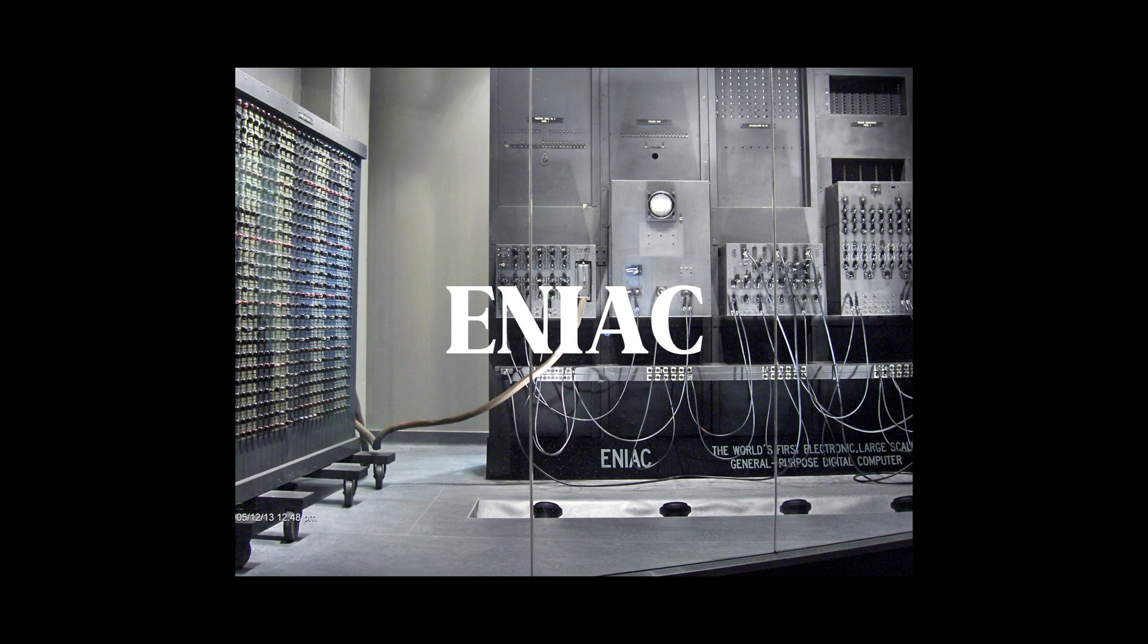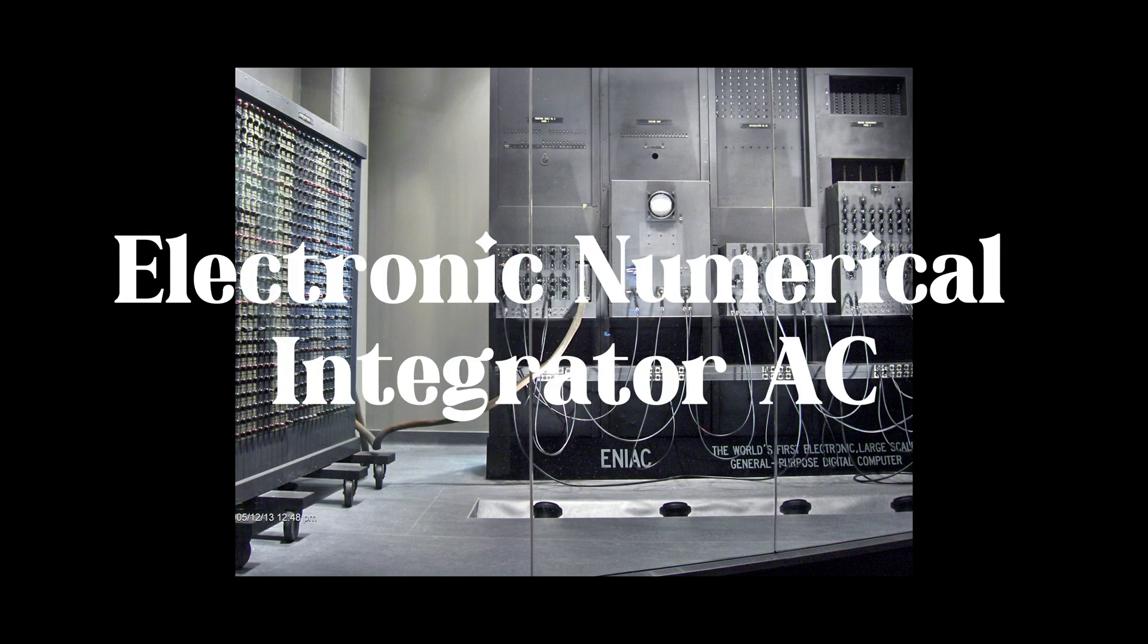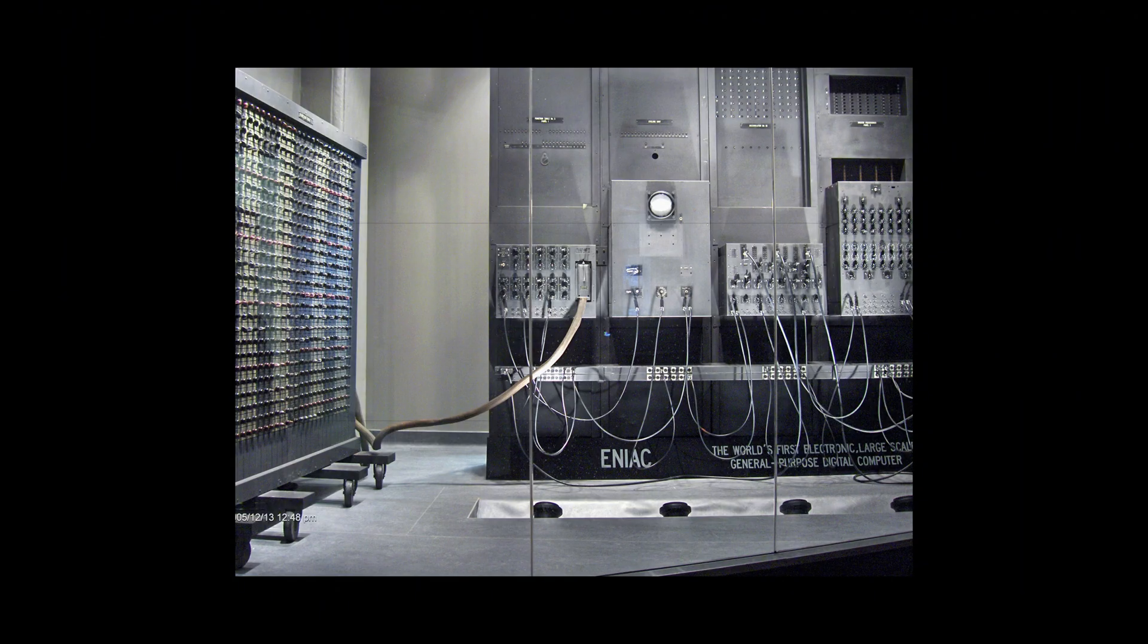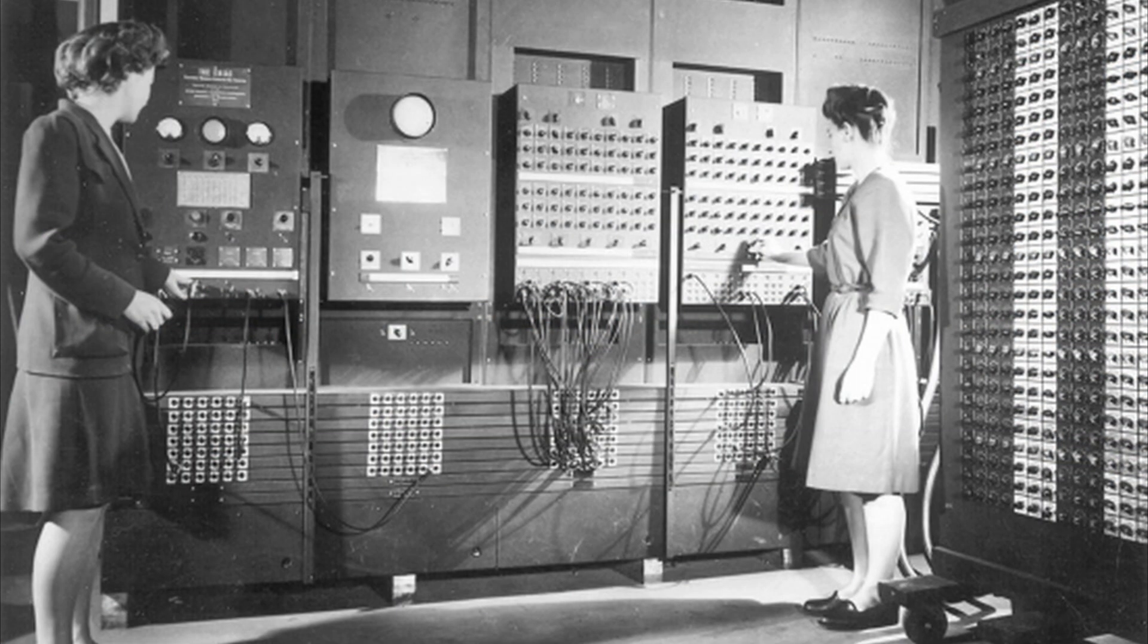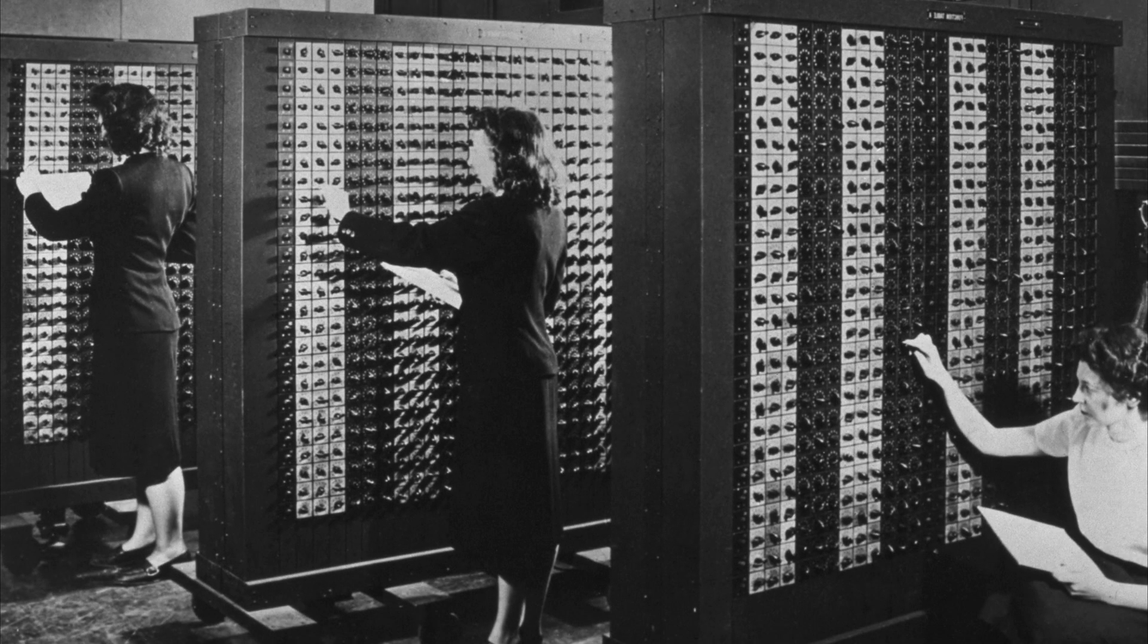The ENIAC, or Electronic Numerical Integrator and Computer, catchy right, is at the forefront of electronic computation. It was created by the University of Pennsylvania for World War II, and was easily the fastest of its time, able to perform over 5,000 additions per second. It didn't have storage, or RAM, or a battery, or anything, and it weighed over 30 tons and required six female operators at all times, but boy was it powerful for the time. It was the first time humanity had really harnessed the power of the electron to do its bidding, and it was a massive leap for our species.